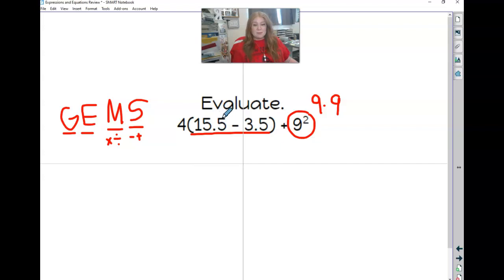I can tell you in this problem there's going to be one, two, three, four steps that you need to follow to solve this problem: groups, then exponents, then you're going to need to multiply, and then you're going to add them together.